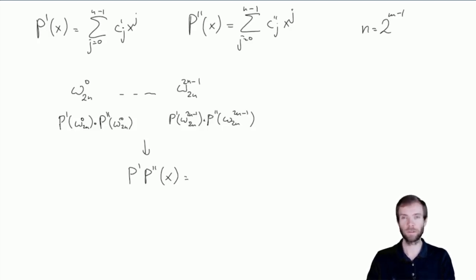So the whole process takes time big O of n log n, and we get the coefficients. Now what are the coefficients of this polynomial? The coefficients for the j-th power of x here, for j from 0 to 2n minus 2, is equal to the sum of the form c'_s times c''_{j-s}.